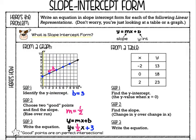Another example — this time we have a table of values. First, let's find the y-intercept. When we have a table, all we're doing is looking in the x column and finding x equals zero, then looking at the corresponding y value. It is right here, so my y-intercept is 18. I'm going to say b equals 18.